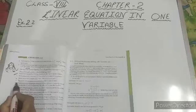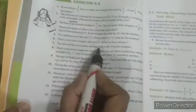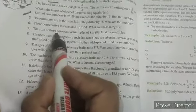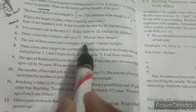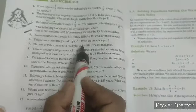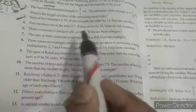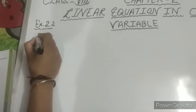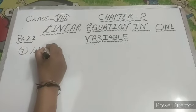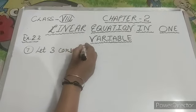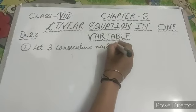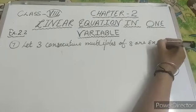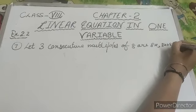Here is exercise 2.2 and question number 7 is: the sum of 3 consecutive multiples of 8 is 888. Find the multiples. The sum means addition of 3 consecutive multiples of 8. The multiples of 8 are 8, 16, 24 — when we add 8 to the last number, we get the next multiple of 8. So we let the 3 consecutive multiples of 8 be 8x, then 8x plus 8, and then 8x plus 16.